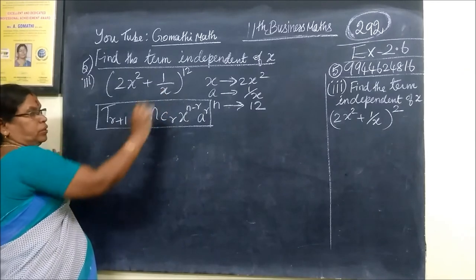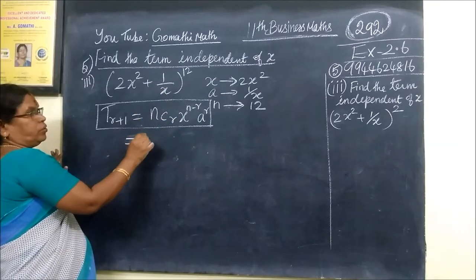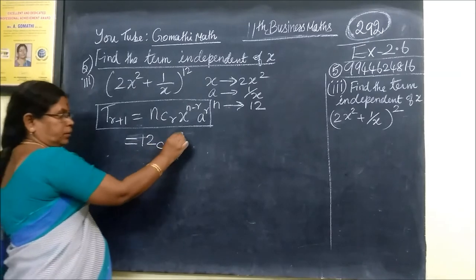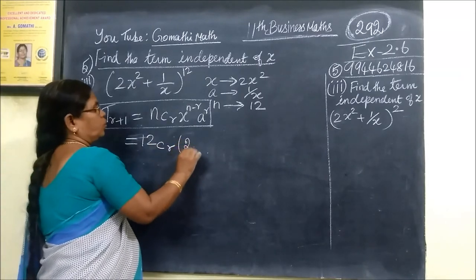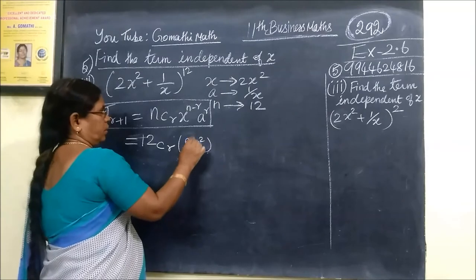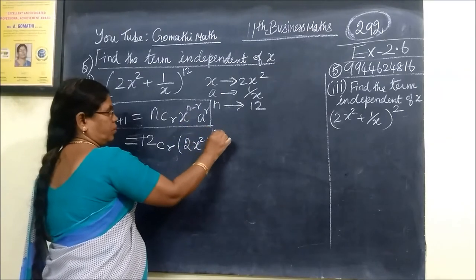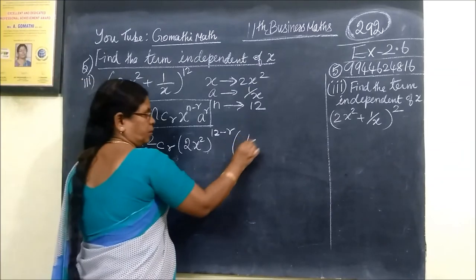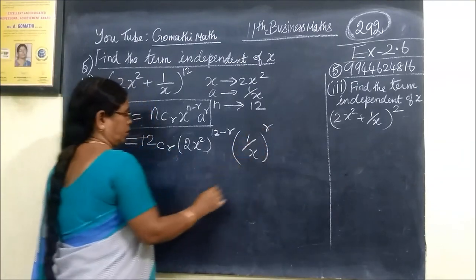This is the general term. We will get the element. So T_r+1 = 12C_R, then 2x, then to the power 12 minus R. Then what is the second term? 1 by x, then to the power R.